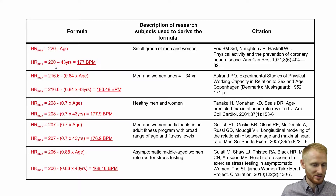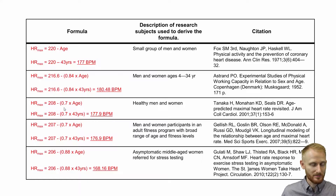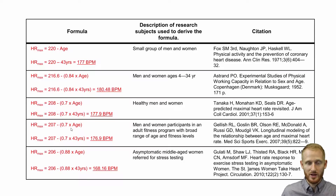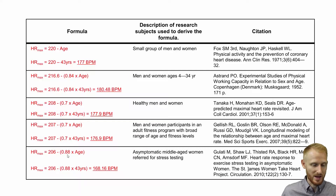So 220 minus age: take 220 minus her age of 43, giving a max heart rate of 177 bpm. The next one is 216.6 minus 0.84 times age, which gives 180.48. Then 208 minus 0.7 times age gives 177.9. Next, 207 minus 0.7 times age gives 176.9. And the last equation here is 206 minus 0.88 times age, giving 168.16 beats per minute for her maximum heart rate.